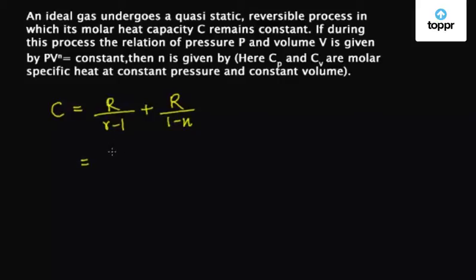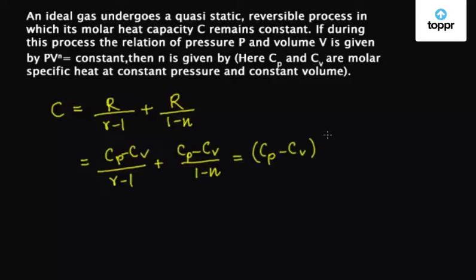So substituting the value of R, that is Cp minus Cv, we have Cp minus Cv upon gamma minus 1 plus Cp minus Cv upon 1 minus n, which equals, let's take Cp minus Cv common, then we have 1 upon gamma minus 1 plus 1 upon 1 minus n.